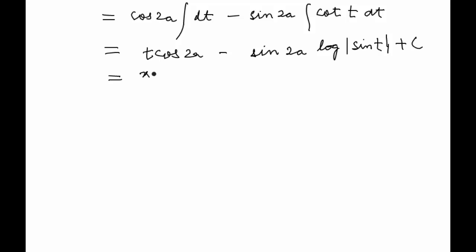This gives us x plus a times cos of 2a minus sin of 2a times log of sine of x plus a, plus constant. So this would be the solution to our problem.